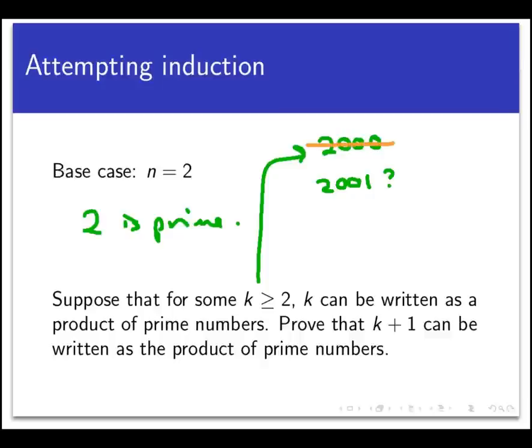For example, knowing the prime factorization of 2,000 doesn't help you much in finding the factorization of 2,001, but knowing the factorization of 667 does.